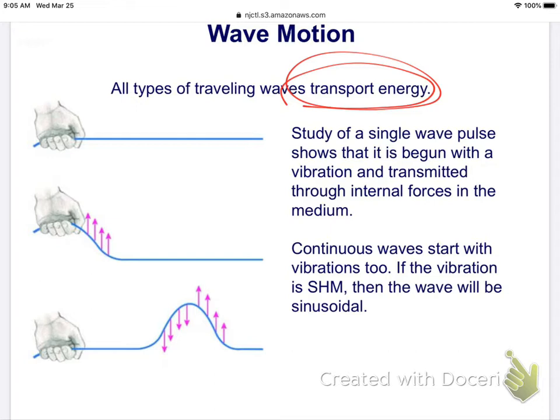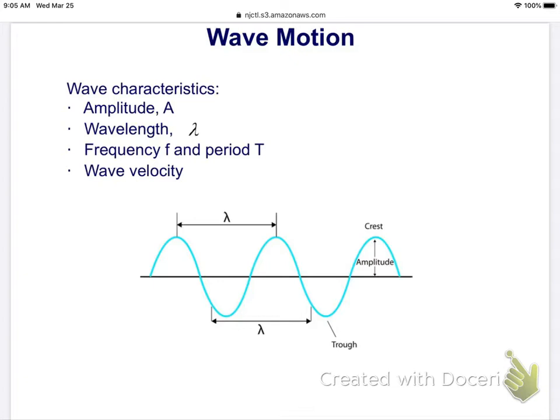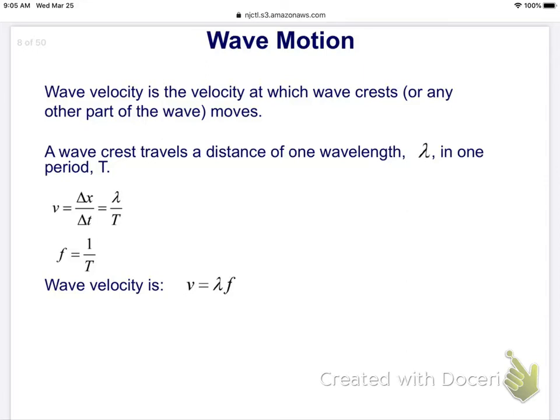Waves transport energy. That's their function. We have a single wave pulse, or we can have continuous waves starting with vibrations. That's known as simple harmonic motion. They have an amplitude, which is their maximum displacement. The wavelength, which we know as lambda. And frequency and period, we've already discussed. And now we need to talk about wave velocity.